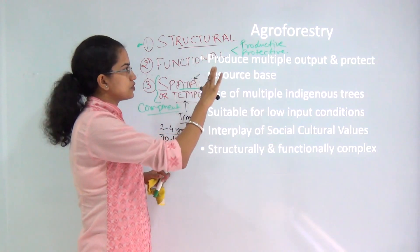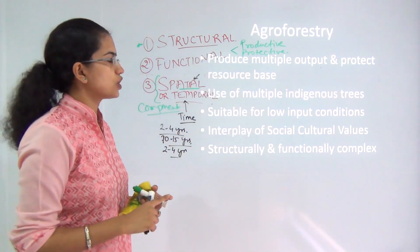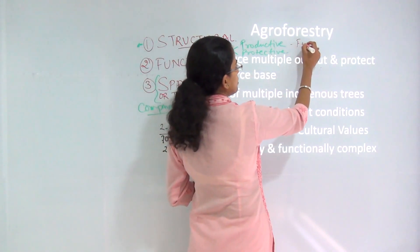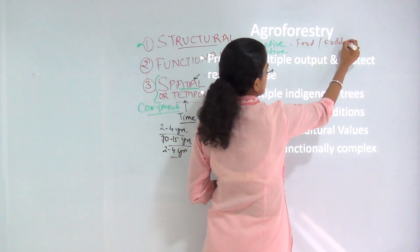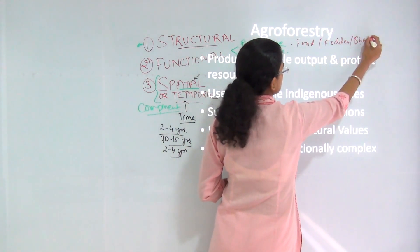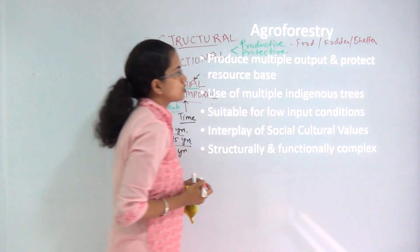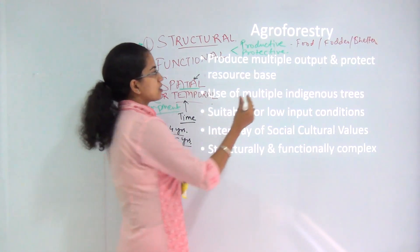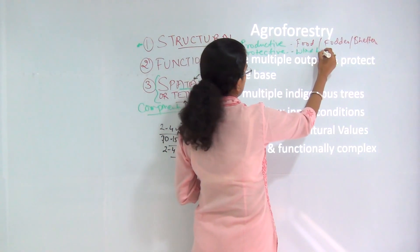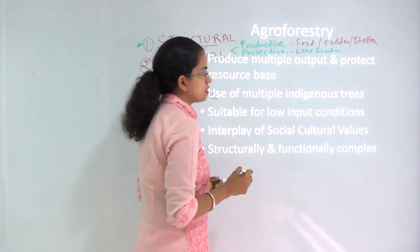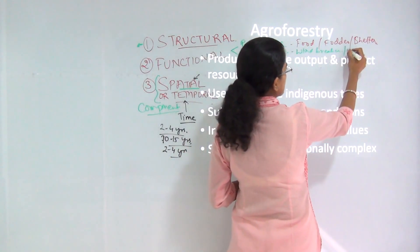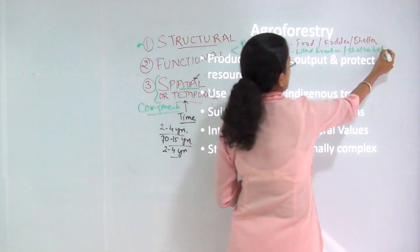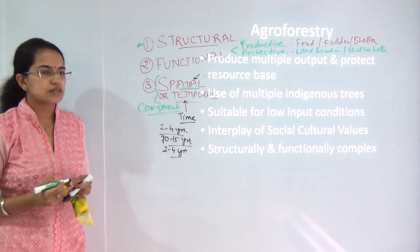Under the functional approach, you have either a productive approach or a protective approach. Productive can be in terms of food, water, or providing shelter — these are all means of productive functions. Whereas protective functions would deal with acting as windbreakers, as we have already discussed in the class on social forestry. You have windbreakers and shelter belts — these would all be kinds of protective approaches in agroforestry.